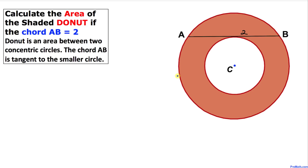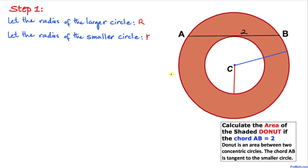Welcome to Pre-Math. In this video tutorial, we have two concentric circles such that we get a donut-shaped shaded region as you can see in the figure. We also have a chord AB that is tangent to the smaller circle, and we are going to calculate the area of this shaded donut. The length of chord AB is 2 units.